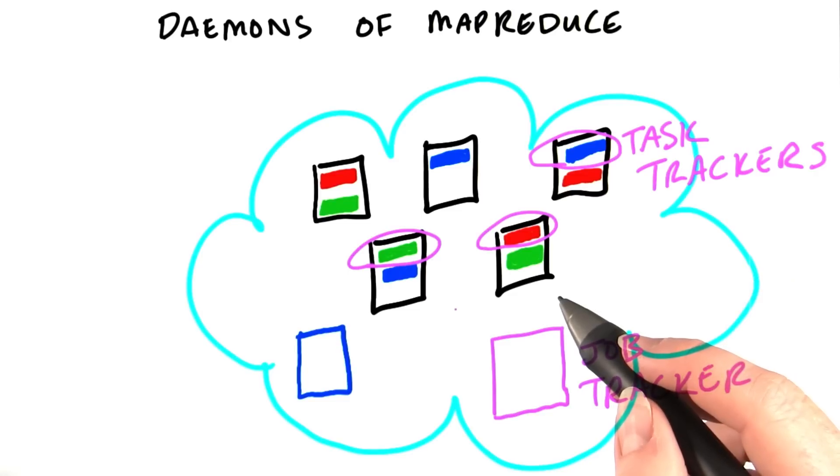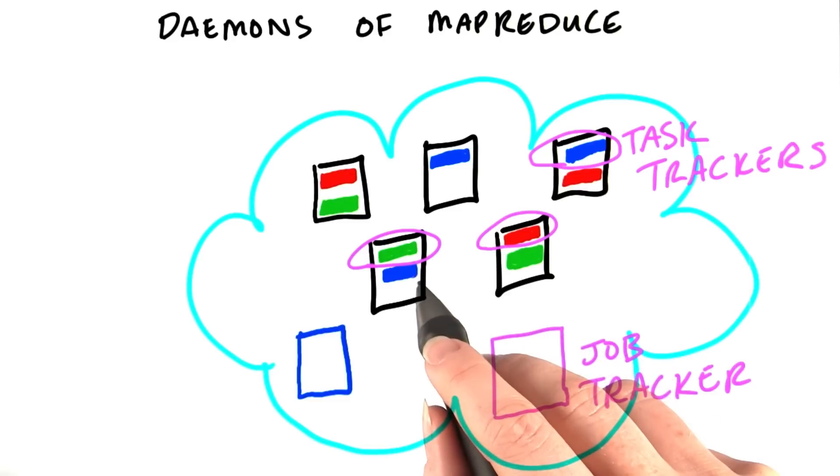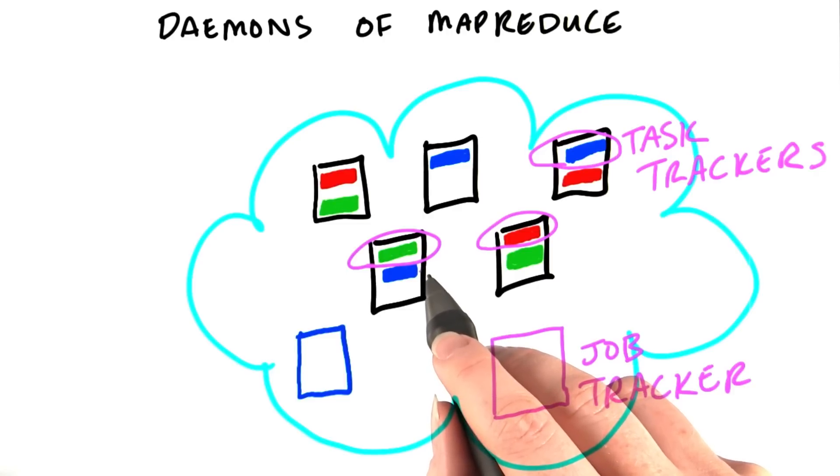As we saw, each mapper processes a portion of the input data. That's known as the input split. And by default, Hadoop will use an HDFS block as the input split for each mapper.